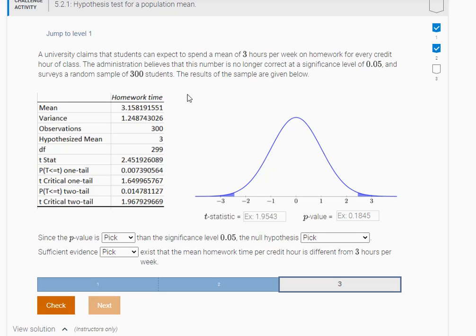So again we're working the problem that says a university claims that students can expect to spend a mean of three hours per week on homework for every credit hour of class. The administration believes that the number is no longer correct. Okay so we saw in step two here that this was a two-tailed test.